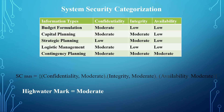In my last video on categorizing an information system, the BMS system — which was a domain system and is not a live system — the highest impact to the BMS system was determined as a moderate impact. This was done by first identifying the information types, then determining the impact level to each of the security objectives. The next step was to identify the highest impact to each of the security objectives. Thereby, we had confidentiality as moderate, integrity as moderate, and availability as moderate. So the highest impact to the security objectives is moderate, and the BMS system was categorized as a moderate impact system.